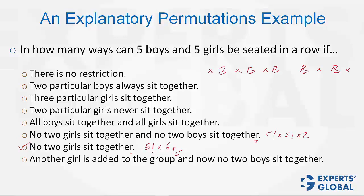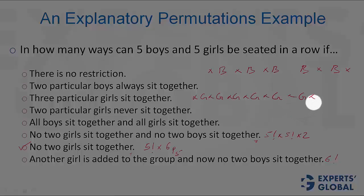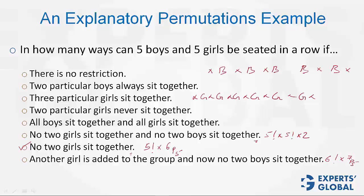Please try the next one yourself: another girl is added, making 6 girls, and no 2 boys sit together. This time the restriction is on boys, so first have the girls seated. 6 girls can be arranged in 6 factorial ways. For boys, there are now 7 places — 1 extra place because of the edges. Out of these 7 places, 5 have to be occupied by the boys. Order matters, so the answer is 6 factorial times 7P5.